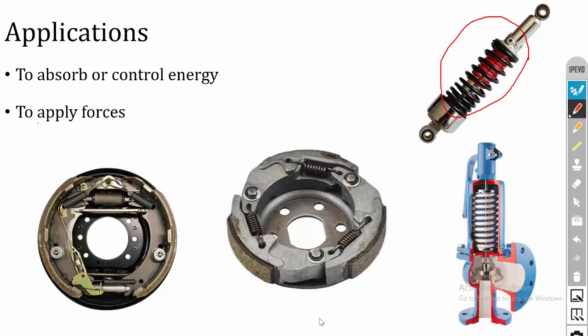The second application is to apply forces. In the clutch plate, the spring is used to apply force — the clutch engages and disengages power from the engine to the gearbox. In the case of brakes, the spring applies force on the brake shoes. Also, in pressure relief valves, which release pressure when inside pressure exceeds a critical point, the spring applies force on the relief valve.